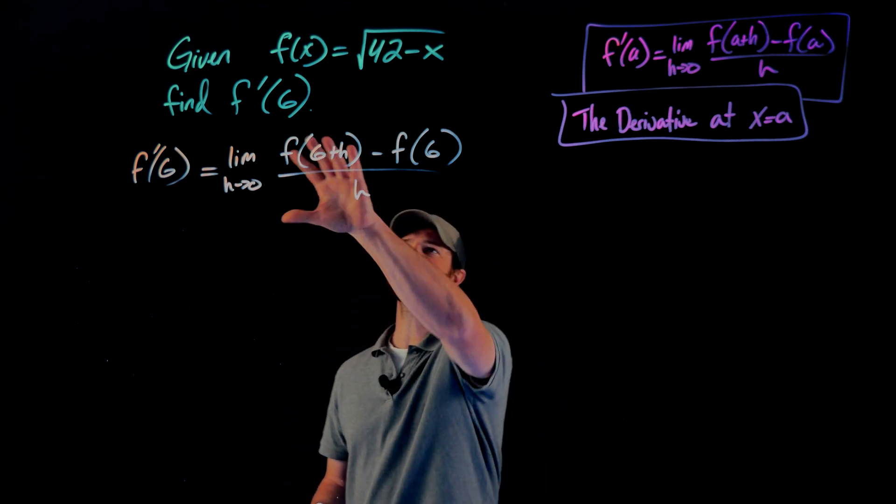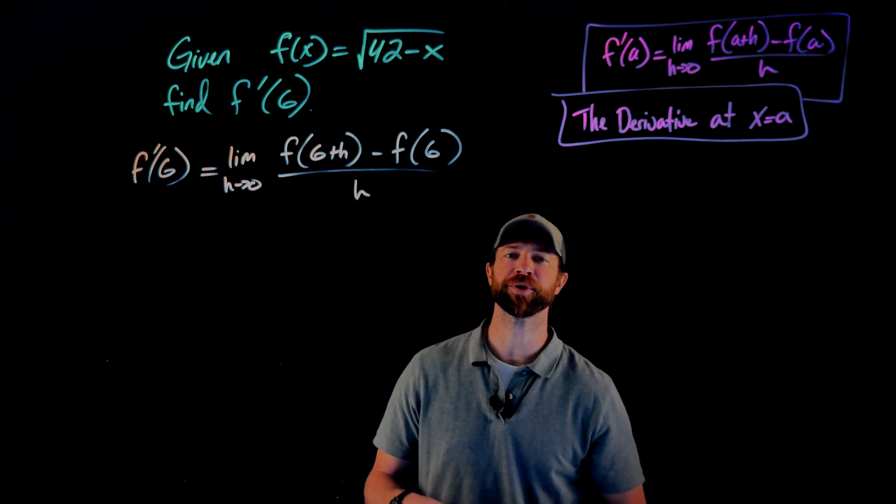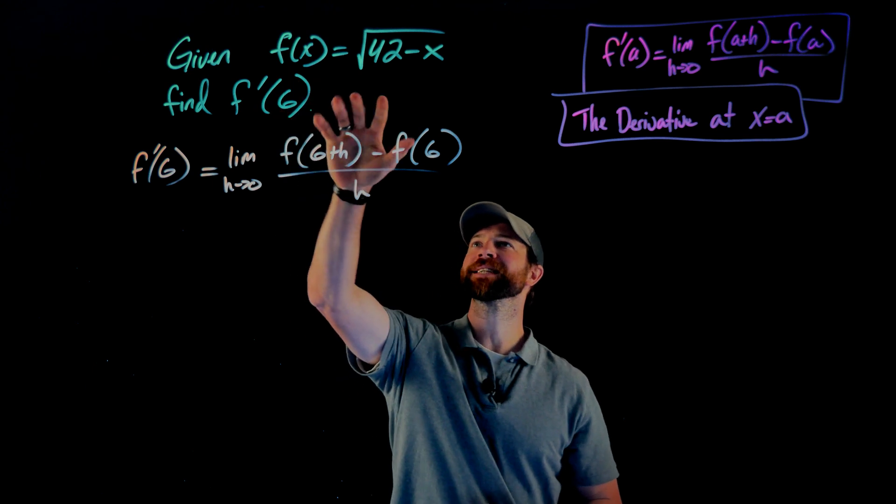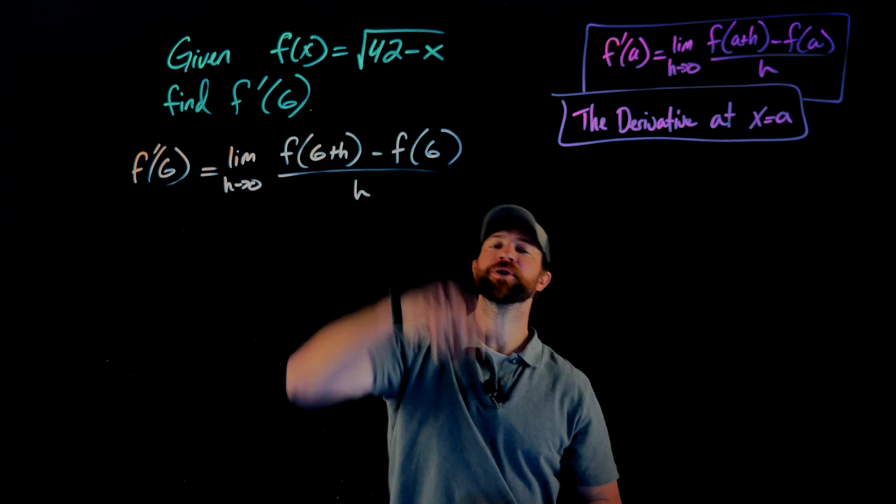All right, in this video, what we're going to do is calculate the derivative at x equals six of the function f of x equals the square root of 42 minus x.